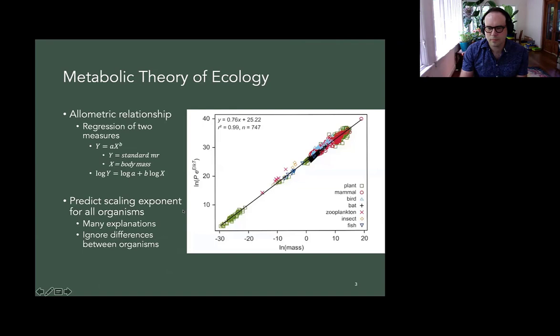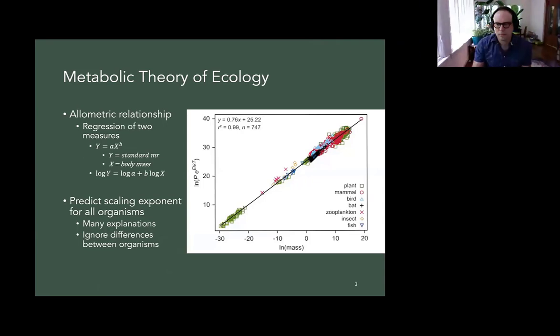The metabolic theory of ecology is this regression of two measurements. Usually it is standard metabolic rate, which is a resting metabolic rate at a specific temperature for an ectotherm, and that is by body mass. So this is an exponential curve that when you log it becomes a straight line. And this graph is looking at a bunch of different organisms, including plants. And when you regress these two measurements, you get an overall slope of about 0.75. And this has been in the literature for a long time of hypotheses about why this may happen and explanations for why it's always 0.75. Many of these theories ignore differences between organisms like ecological differences in lifestyle traits.